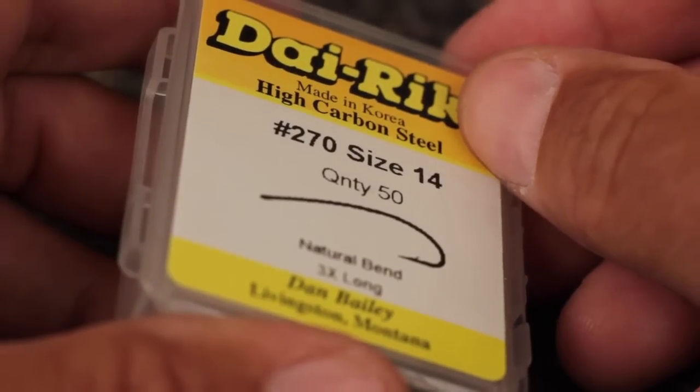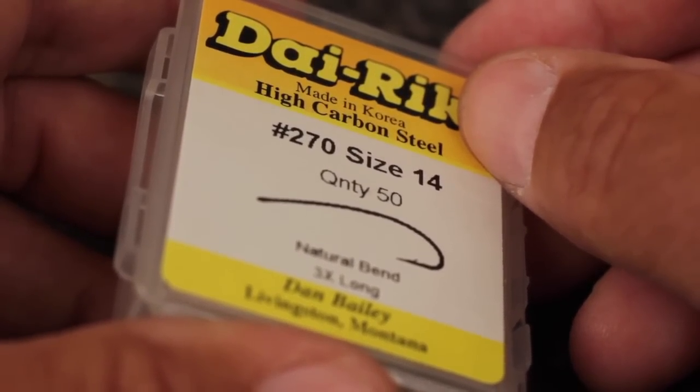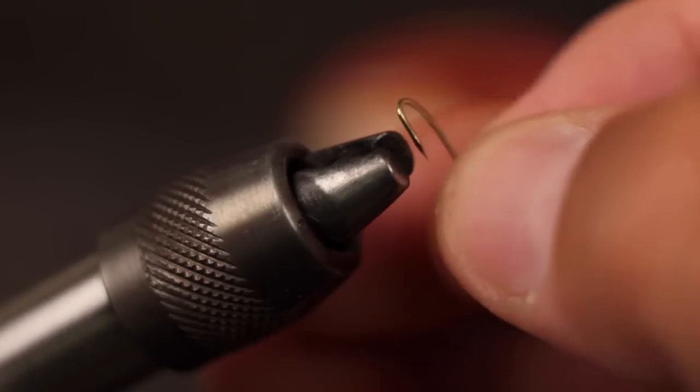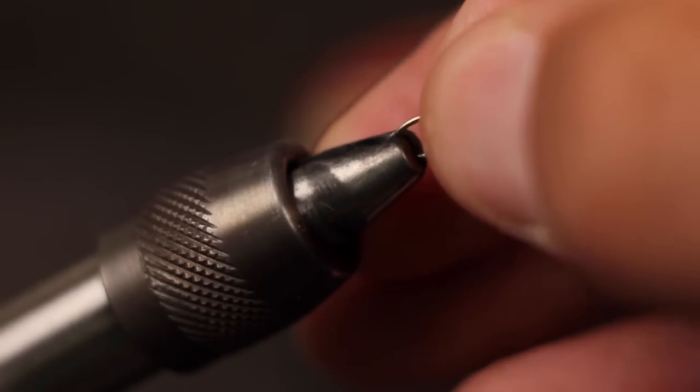For a hook, I'm going to use a size 14 Dairiki number 270. This fly is most often tied in this size because it really works out well for the feathers used in its construction. Start by mashing the barb on your hook and then getting it firmly secured in your tying vise.